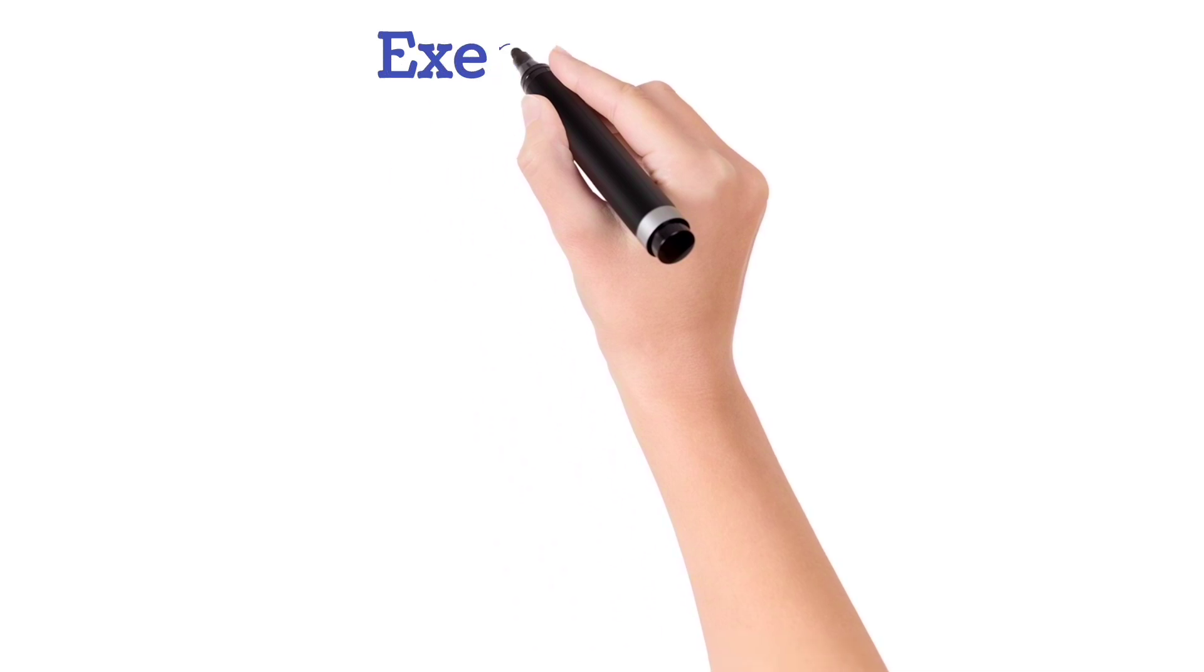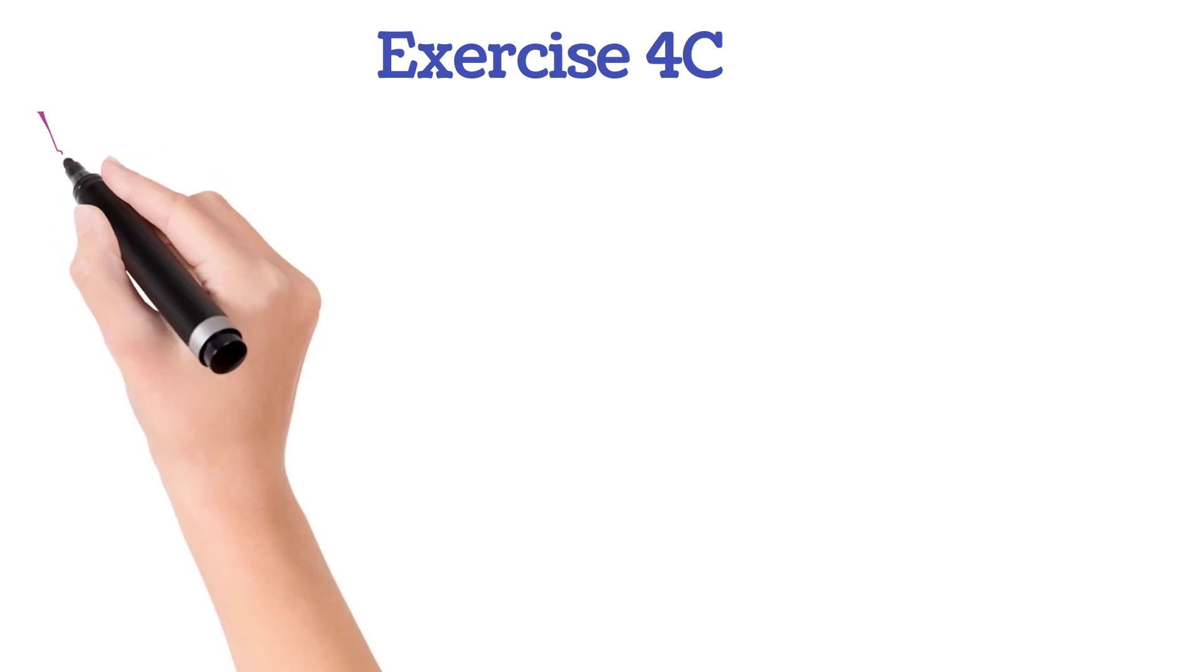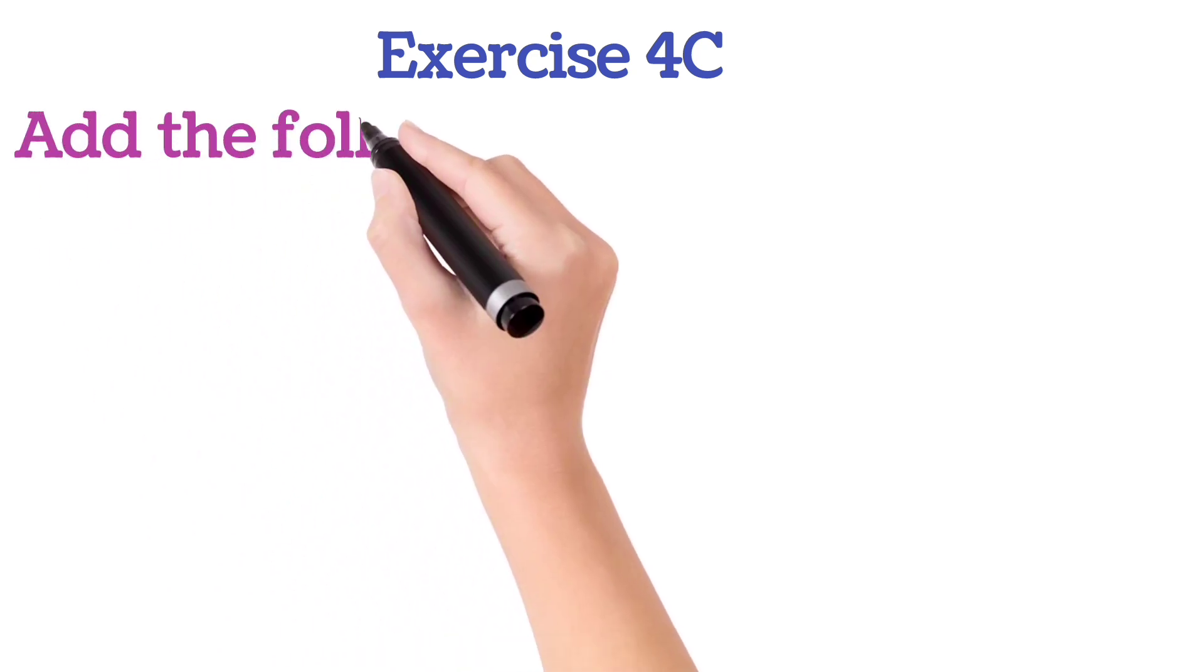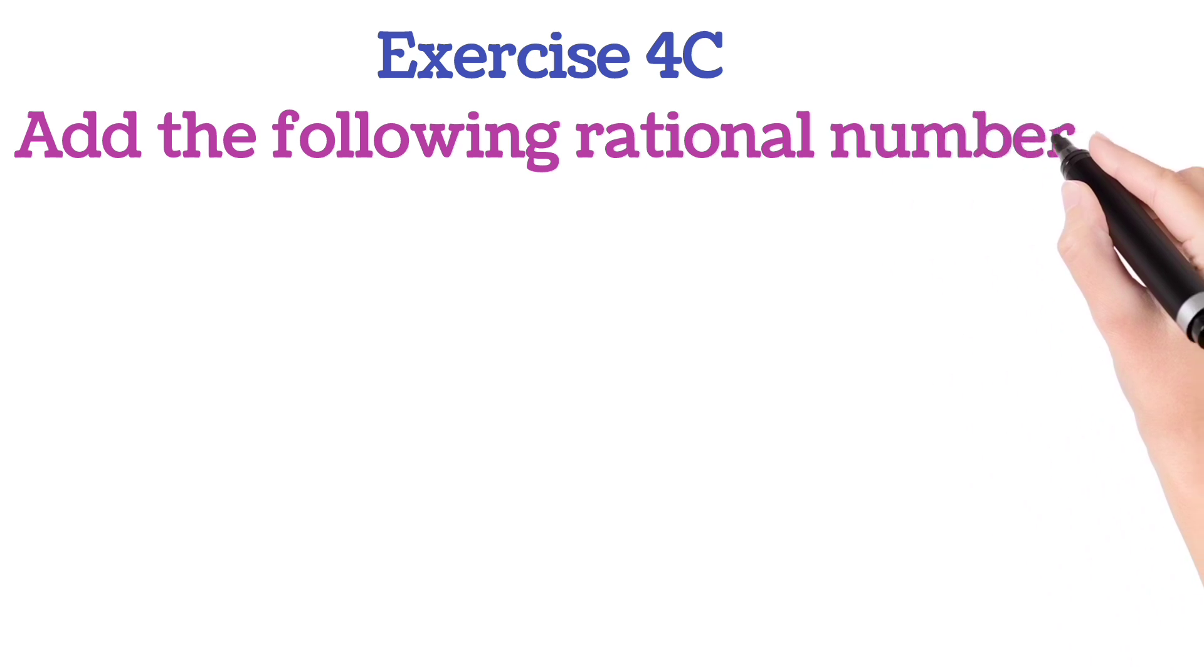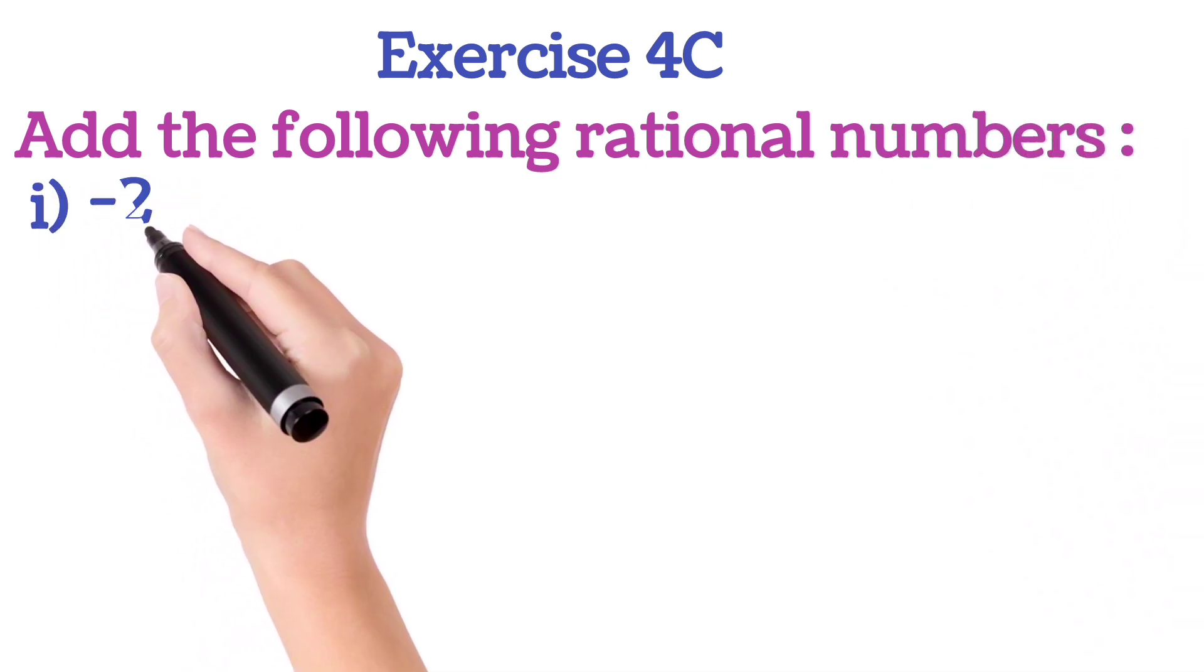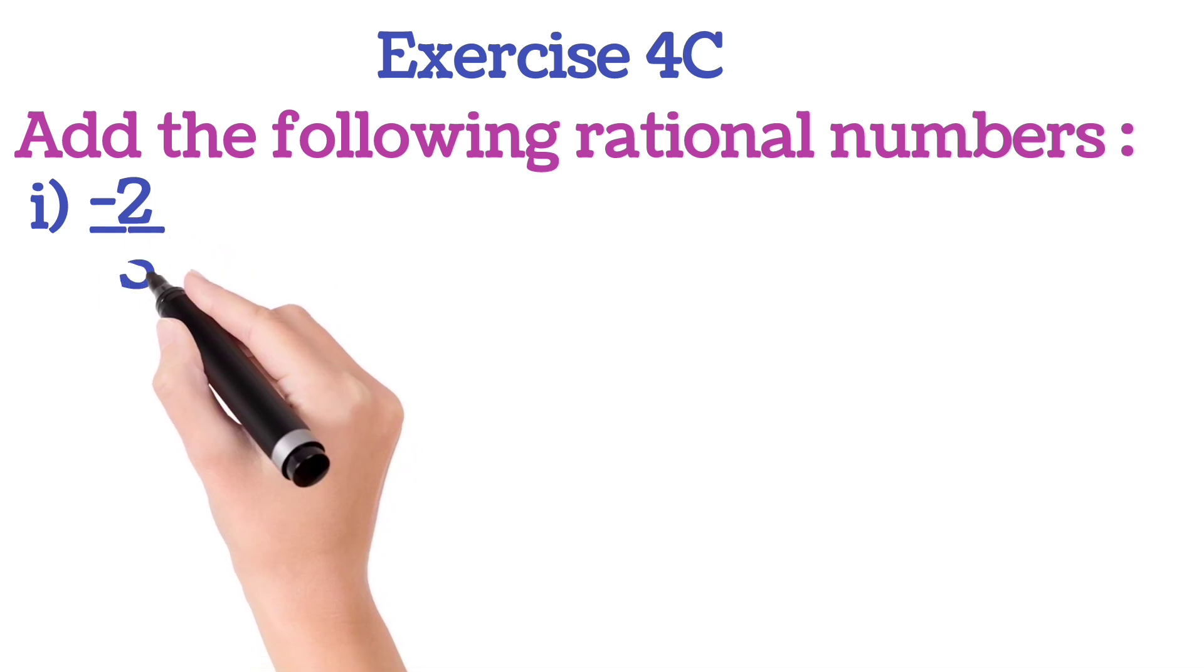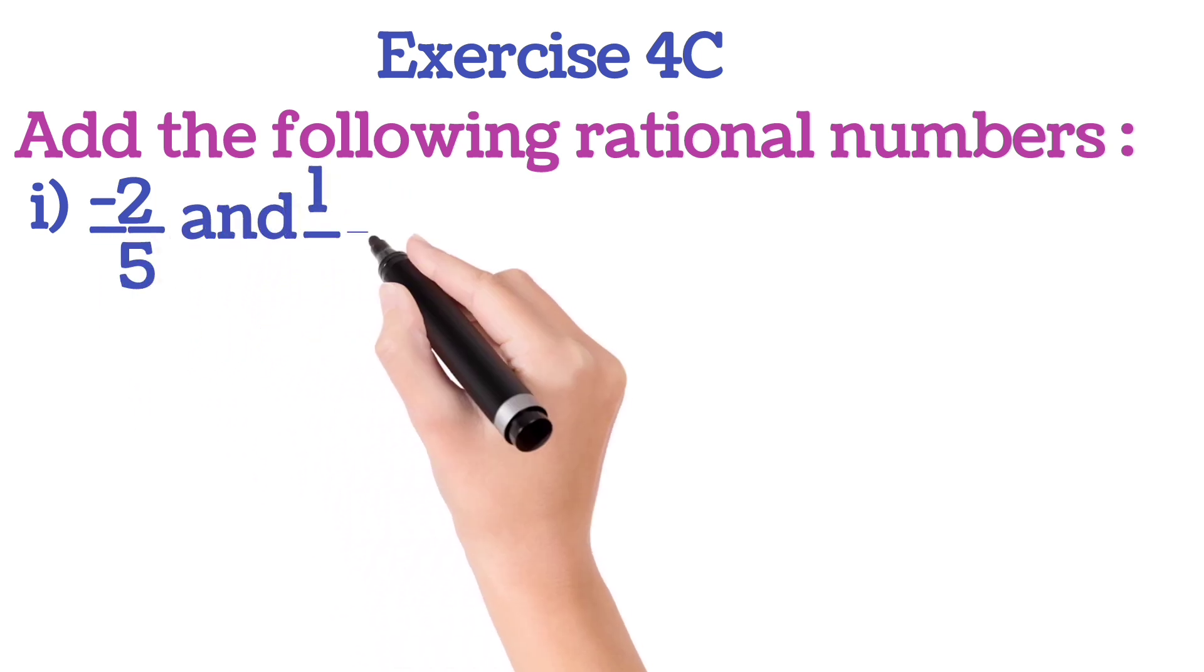Exercise 4C we will do. Here I will do the selected sums, different types. First one is add the following rational numbers. First one is you will add minus 2 by 5 and 1 by 5.